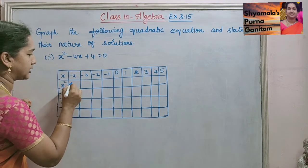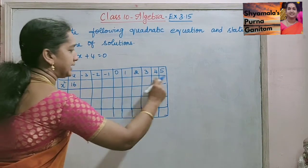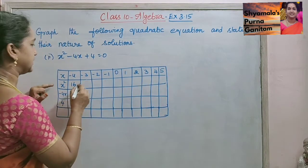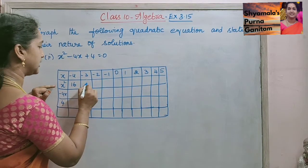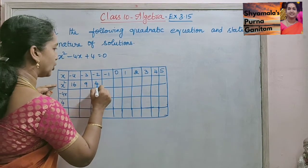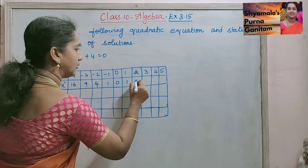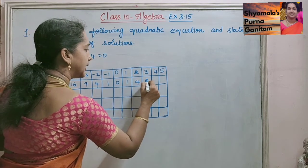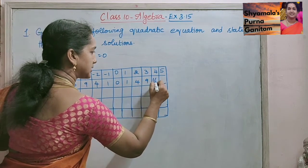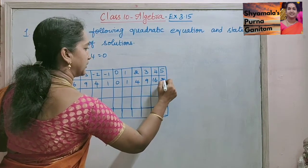For the x squared column: 16, 9, 4, 1, 0, 1, 4, 9, 16, and 25.